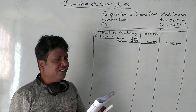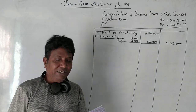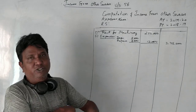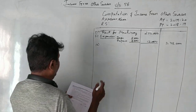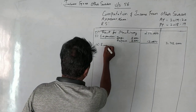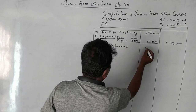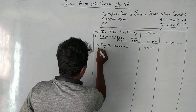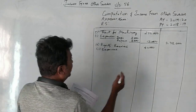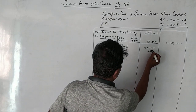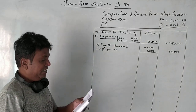We earned a royalty of ₹40,000 from a stone quarry and the expenses to earn this income are ₹3,000. So royalty received is ₹40,000. After deducting ₹3,000 expenses, ₹37,000 is taxable income.